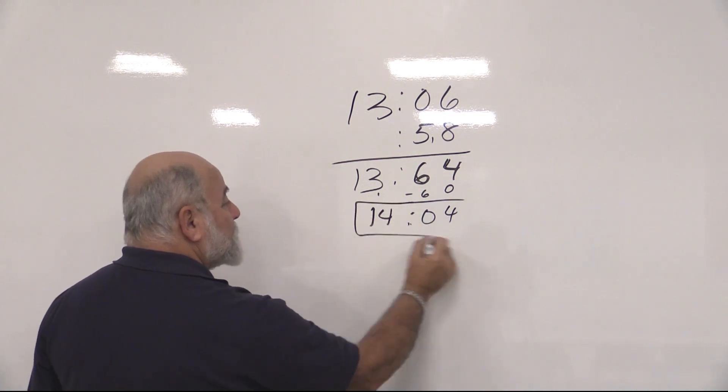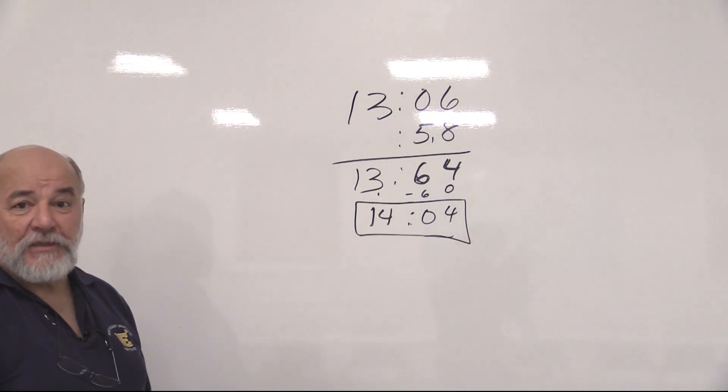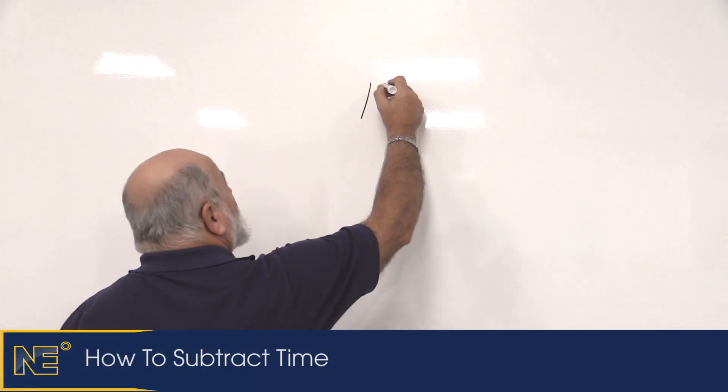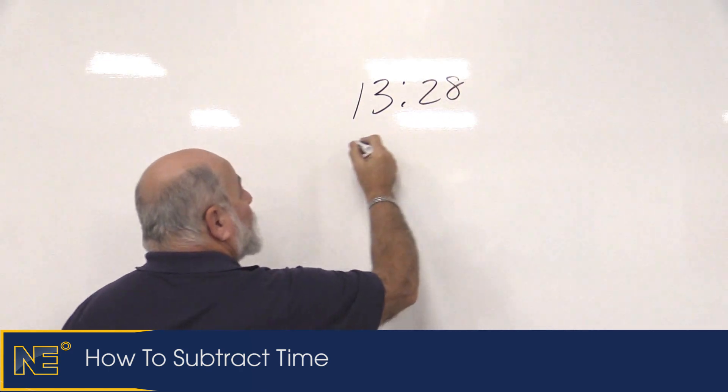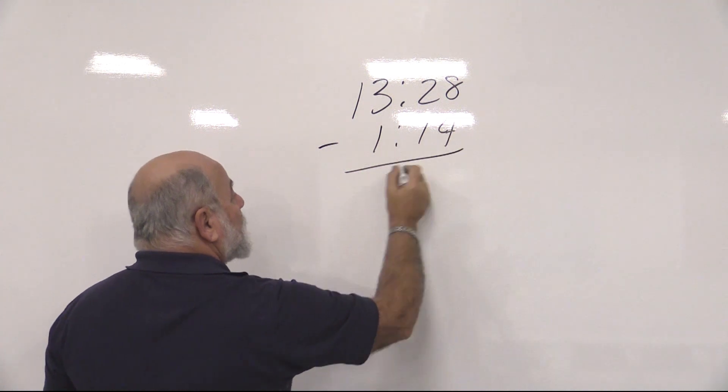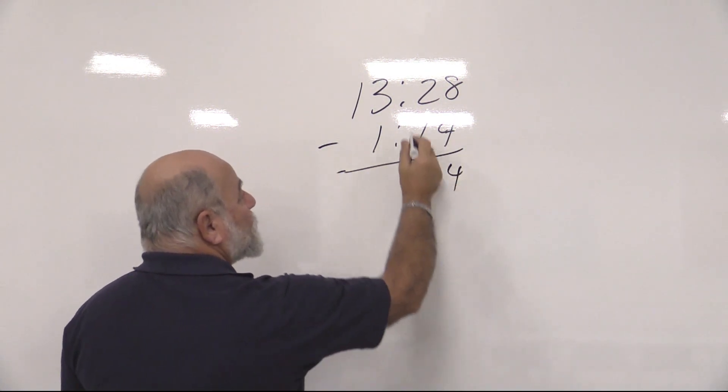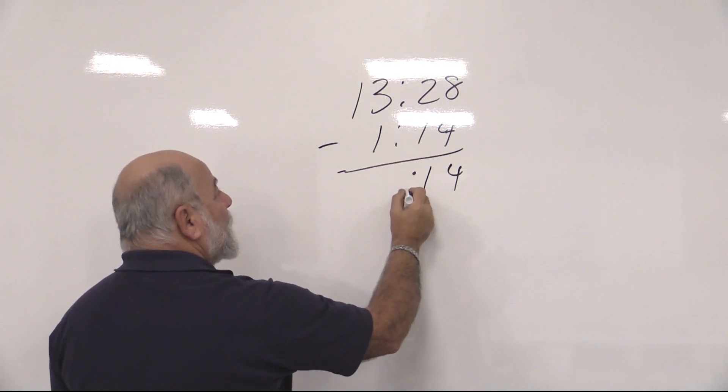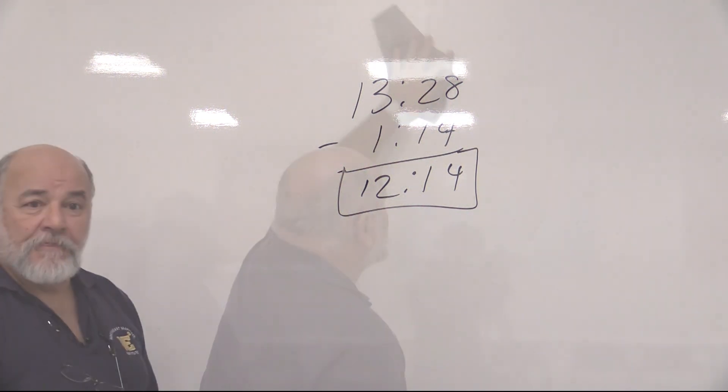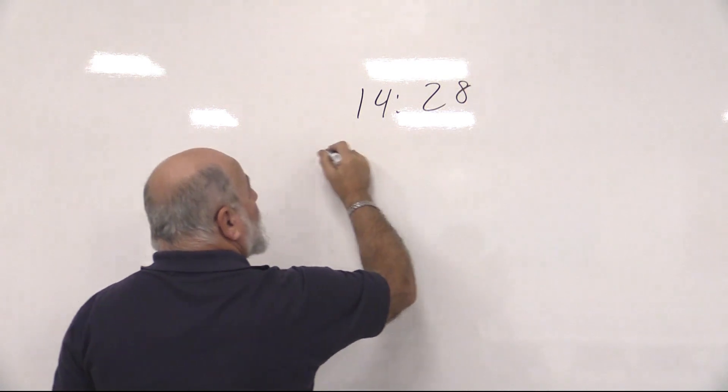If we had a subtraction and we were at 1328 and we had to subtract 1 hour and 14 minutes, we could do that pretty simply. 8 minus 4 is 4, 2 minus 1 is 1, 13 minus 1 is 12. 1214.